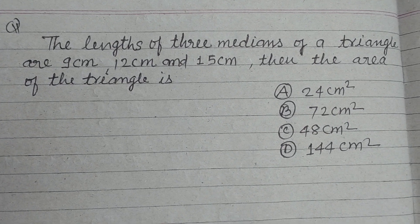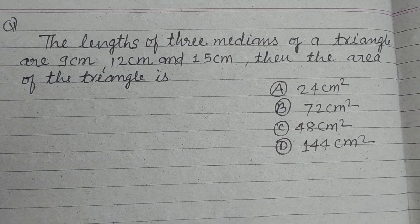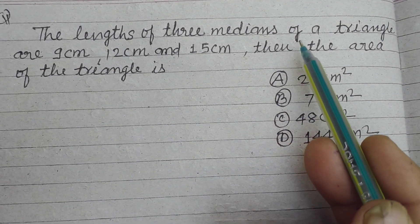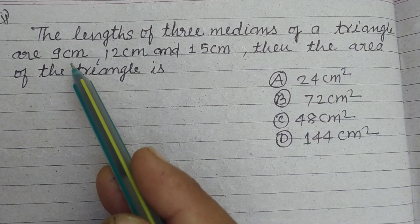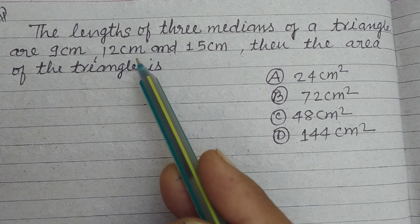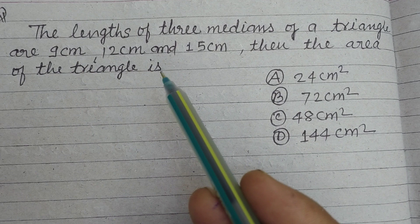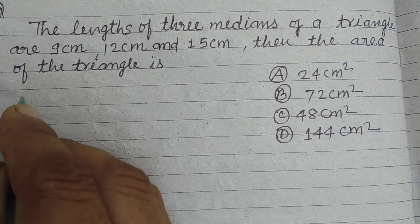Hello students, welcome to this YouTube channel. The length of three medians of a triangle are 9 cm, 12 cm and 15 cm. Then the area of the triangle is.